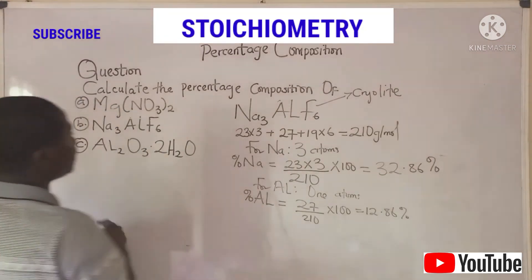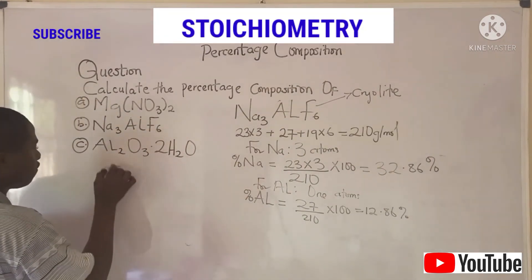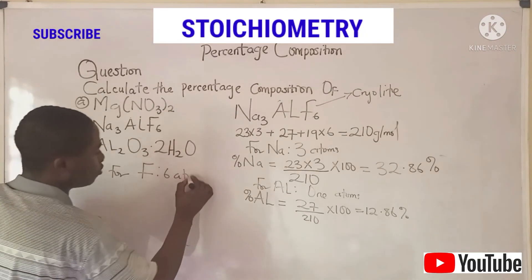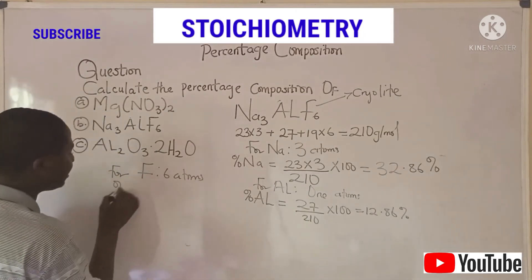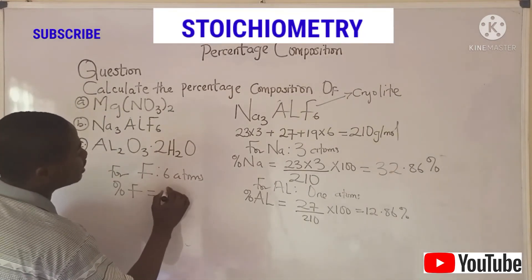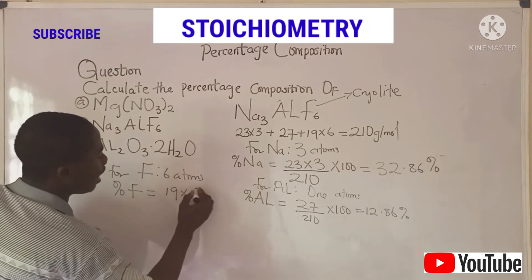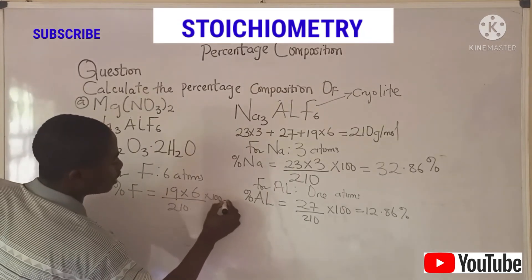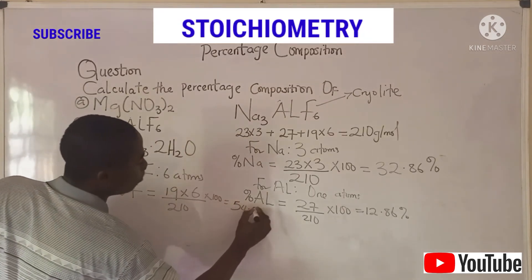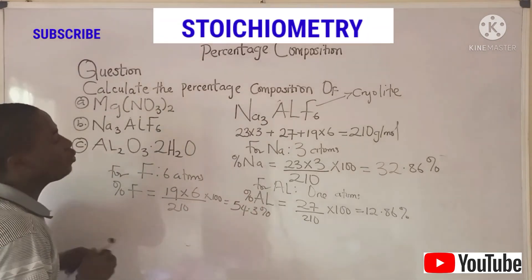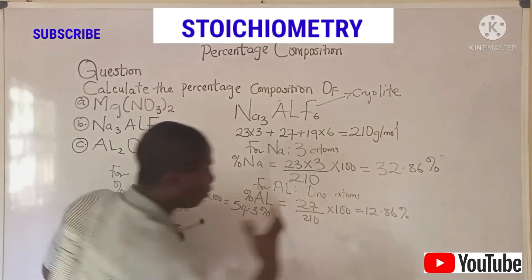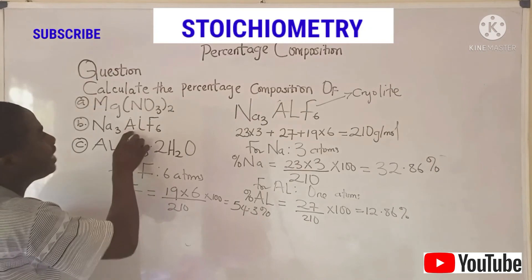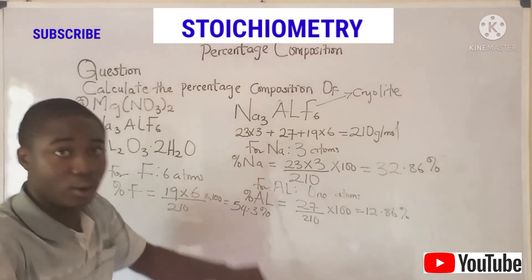Let's quickly deduce the percentage of fluorine in cryolite. For fluorine: how many atoms of fluorine are present? We have six atoms. So the percentage composition of fluorine equals the atomic mass of fluorine — 19 — times 6, over 210, times 100. When we calculate this, we get 54.3%. When you add all three percentages in your calculator, you get 100%. That's how you calculate the percentage composition of elements in a compound.